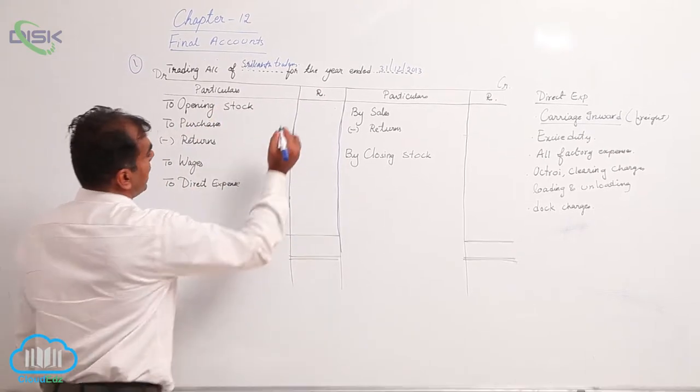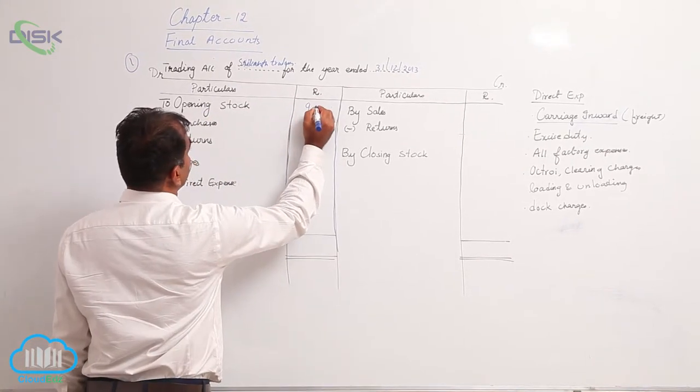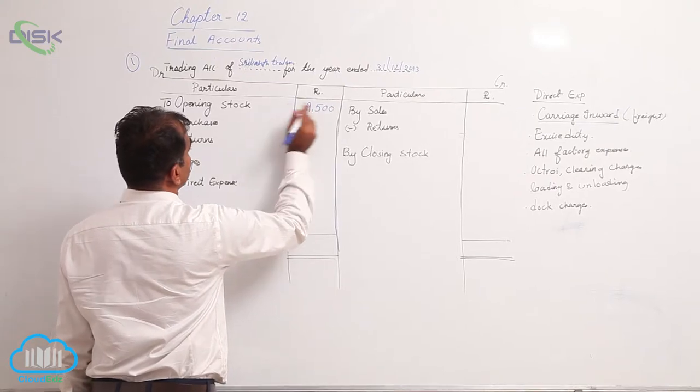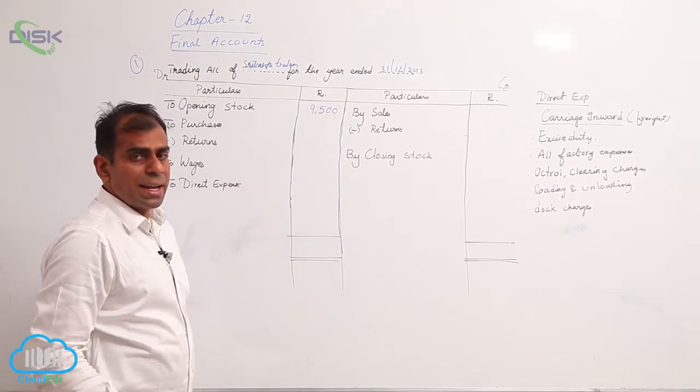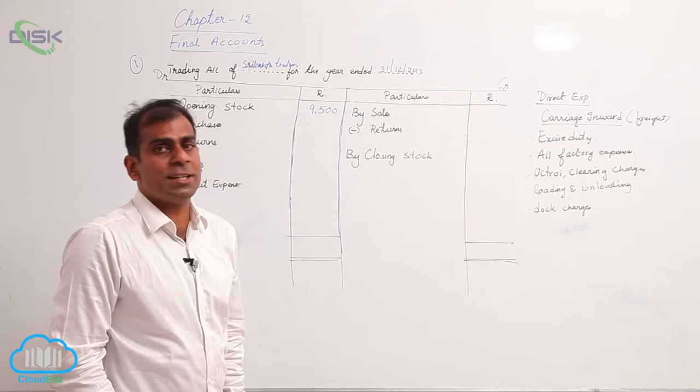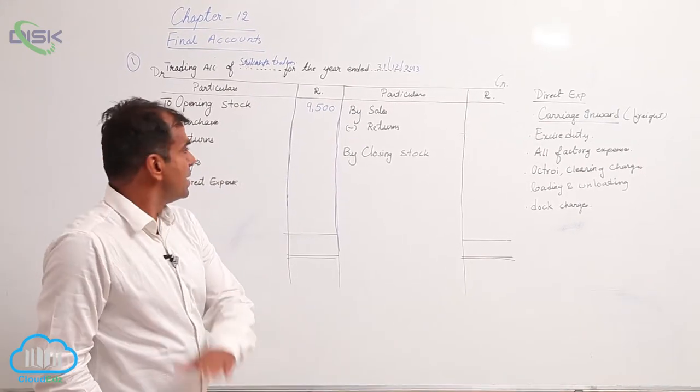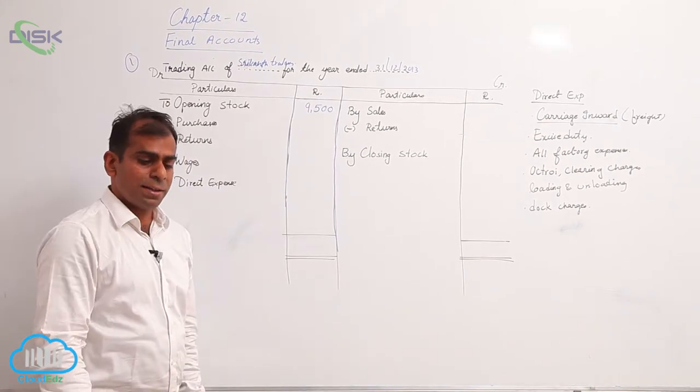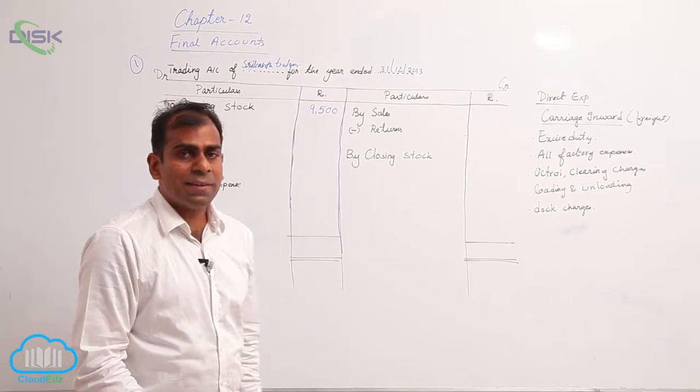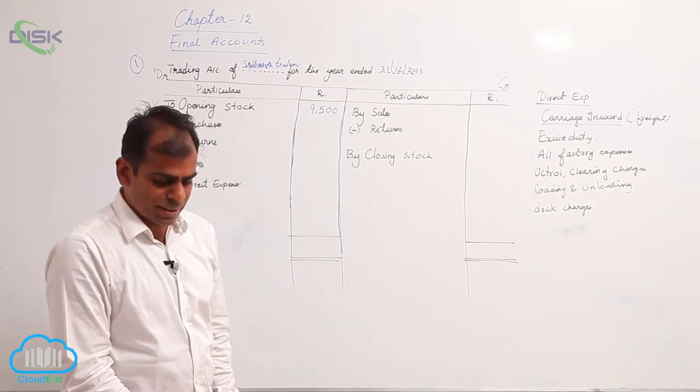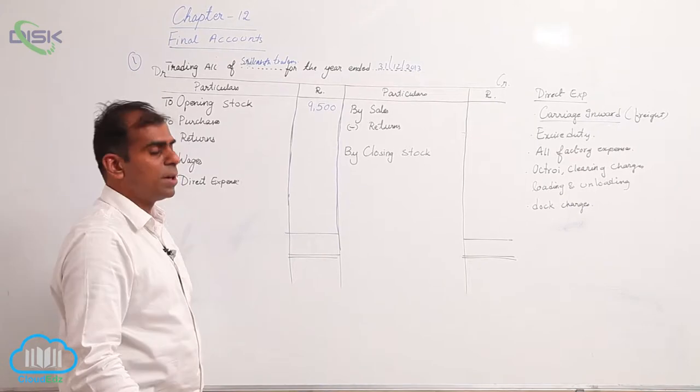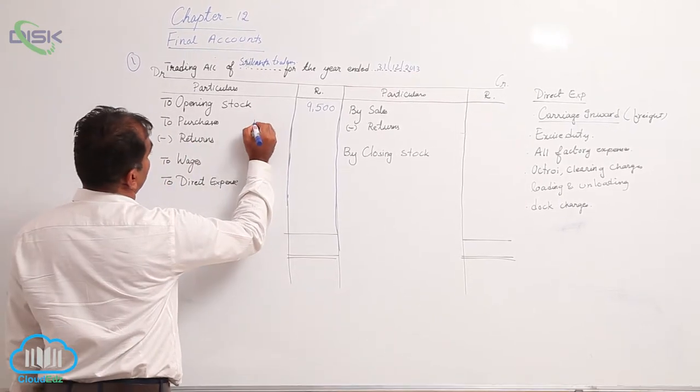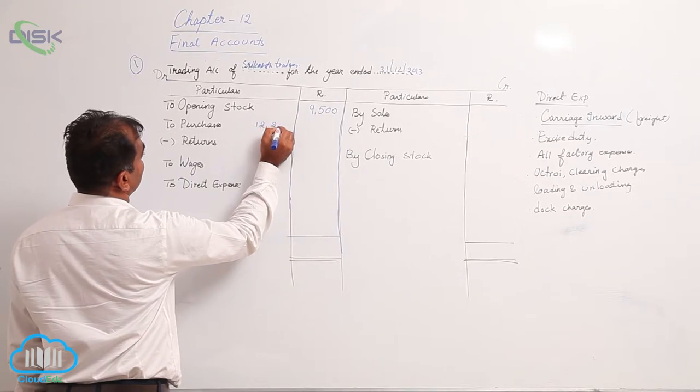Now the next item is purchases. You are given purchases, just check in the problem whether you are given purchase returns or not. Yes we do have purchase returns. So what I will be doing is purchases of 12,200 I am writing in a column and leave it.